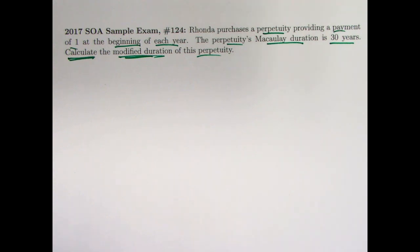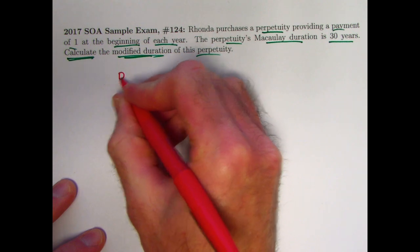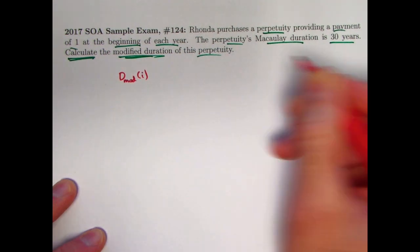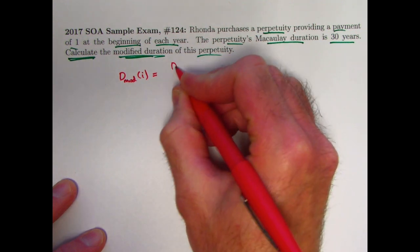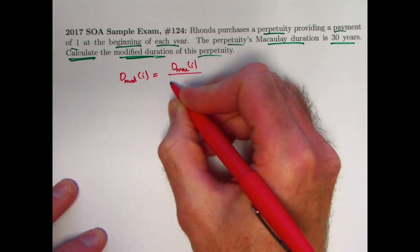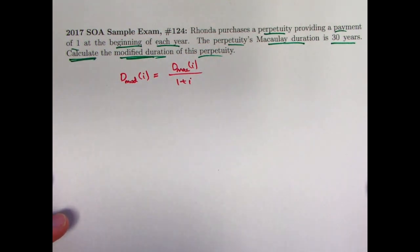Let's recall the definition of modified duration from video 158. The modified duration, d mod, which in general does depend on i, is the Macaulay duration, d mac, which also depends on i in general, divided by 1 plus i, where i is going to be the effective annual interest rate here.